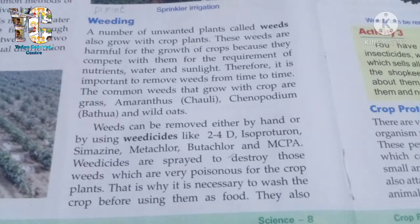Name the common weeds. Number one: grass. Number two: amaranthus (cholai). Number three: chenopodium (bathua) — you must have eaten bathu. Number four: wild oats. These are the ones which grow in the fields along with the main crops, and hence we are supposed to remove them timely.